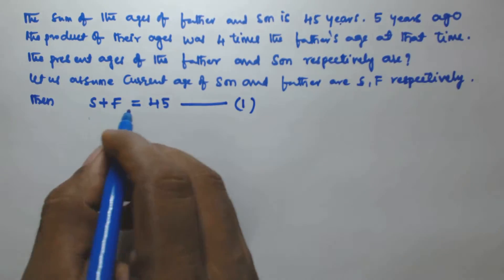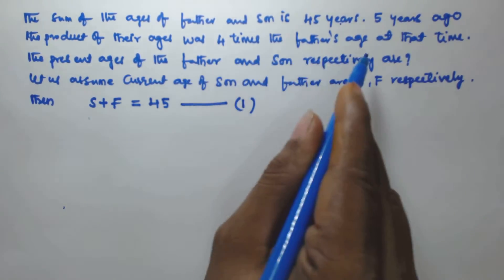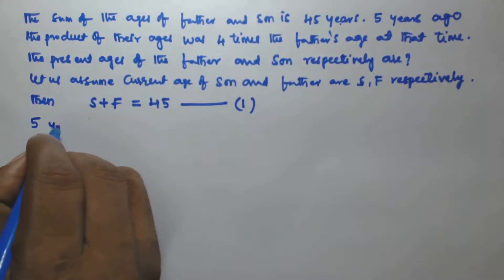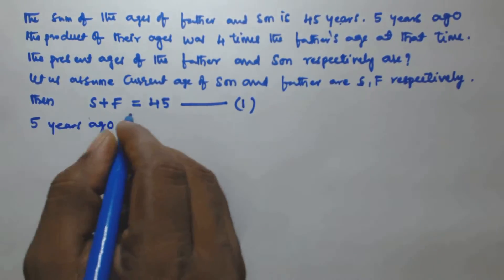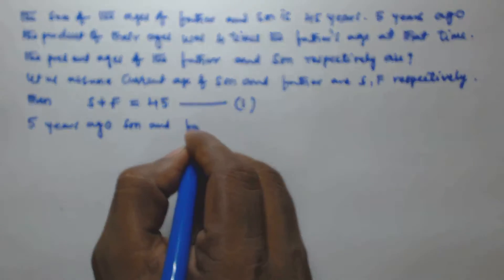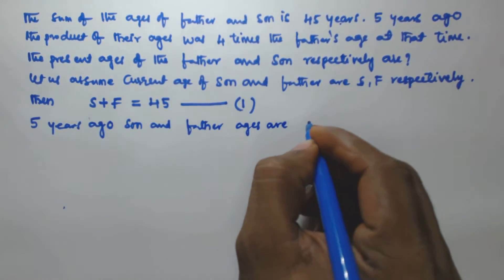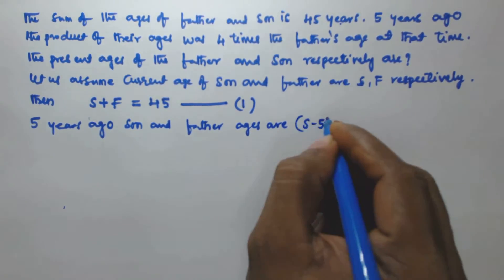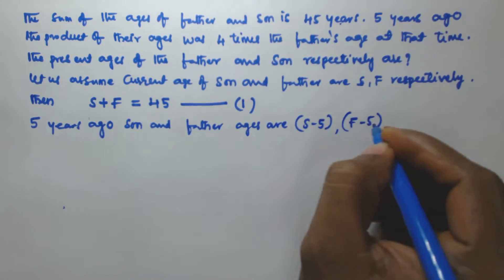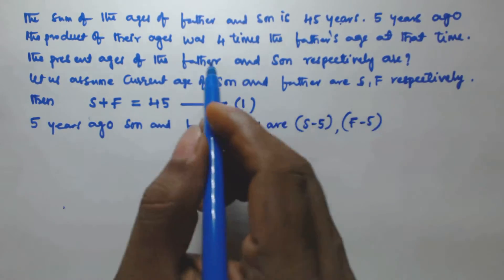Now it is given that five years ago the product of their ages was four times the father's age at that time. Five years ago, the ages of the son and father are s minus five and f minus five respectively.